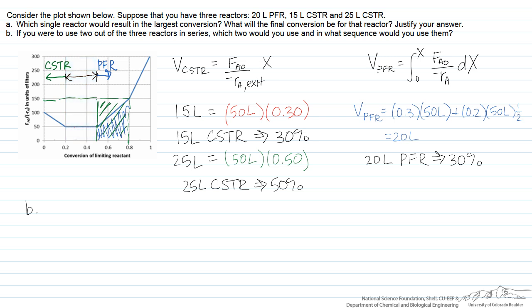By using the 25-liter CSTR first and reaching a conversion of 50%, we utilize the CSTR where it's most advantageous, including the region where reactor choice doesn't matter. Then after that we use our 20-liter PFR. So our solution to Part B is: use the larger CSTR first, then the PFR.